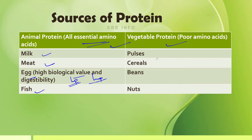Compared to animal protein, vegetable proteins are poor in amino acids. Examples of plant protein sources are pulses, cereals, beans, nuts, etc. These are the rich sources of vegetable protein.